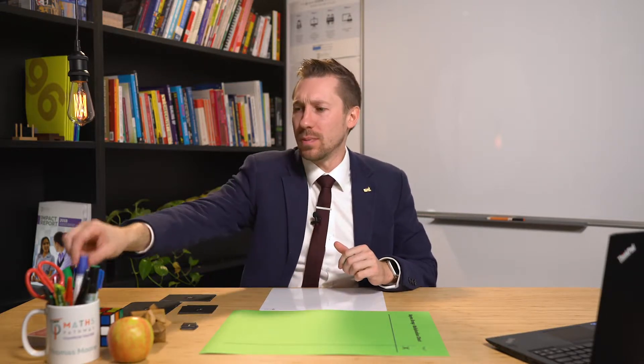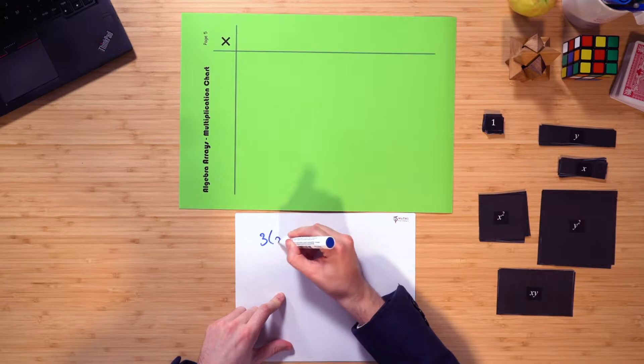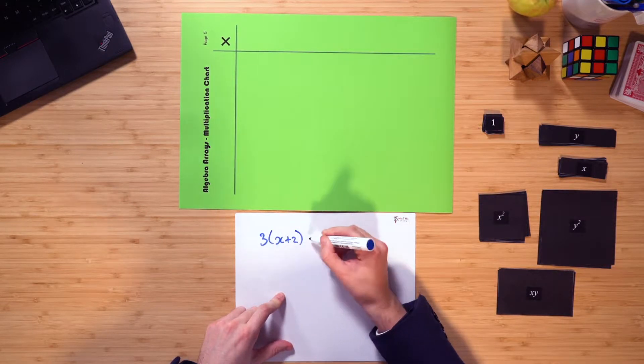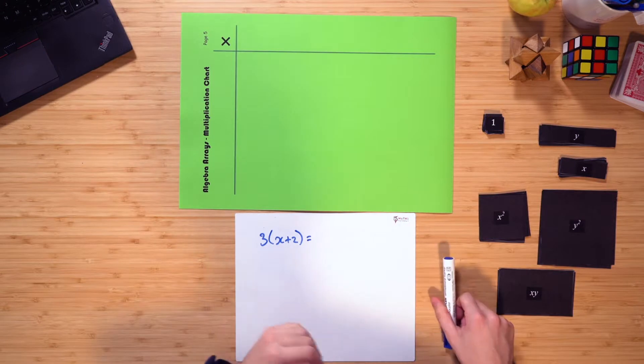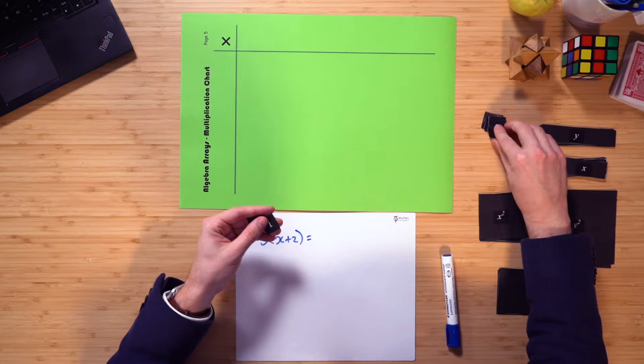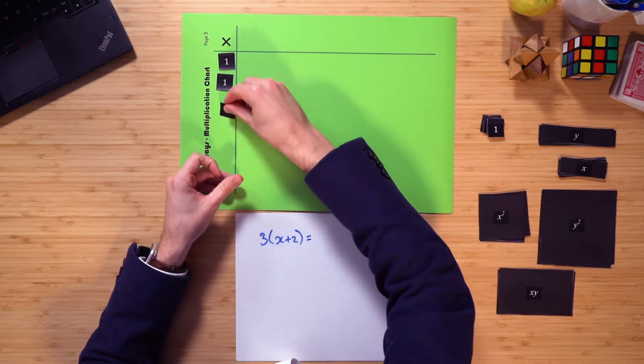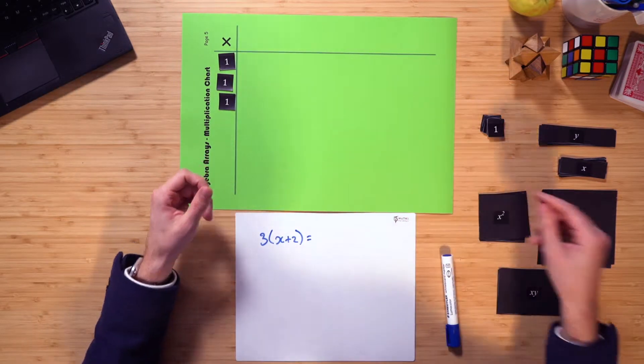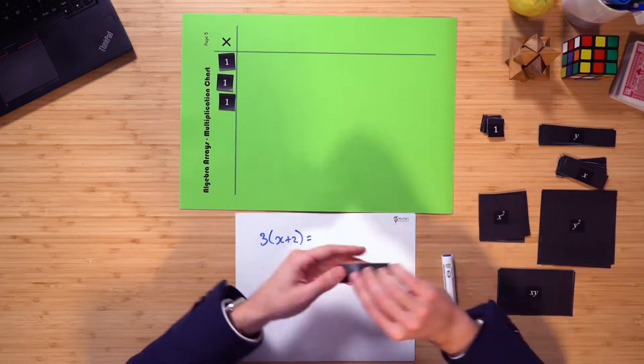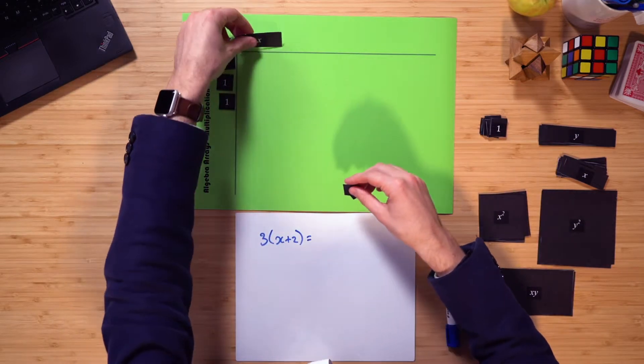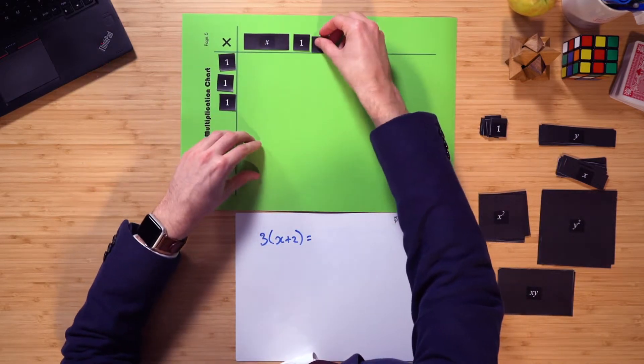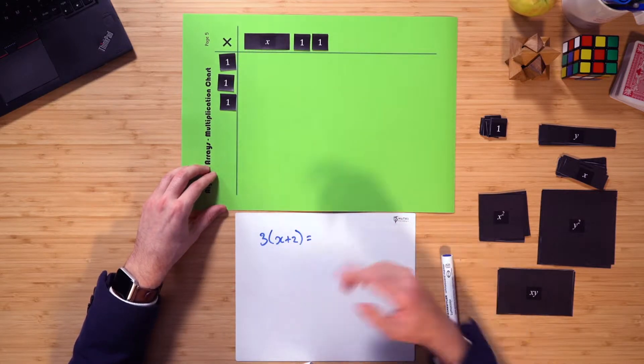Let's start off with the question, 3 multiplied by x plus 2, which we had before, and try and use the model to determine what that actually is. Well, if I have 3, I'm going to grab three ones, and place them along here like this. And then when I'm multiplying it by x plus 2, well, here's my multiplication symbol. So therefore, I'm going to grab x and add 2. So I have 3 multiplied by x plus 2.